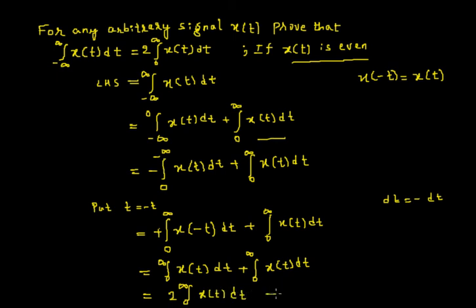This is now equal to the RHS. Hence I have proved that integration from minus infinity to infinity of x(t) dt is equal to 2 times the integration from 0 to infinity of x(t) dt, if x(t) is even.